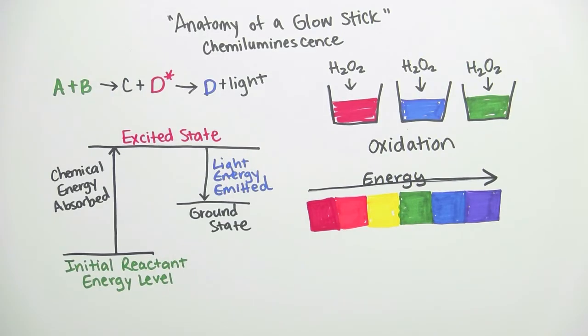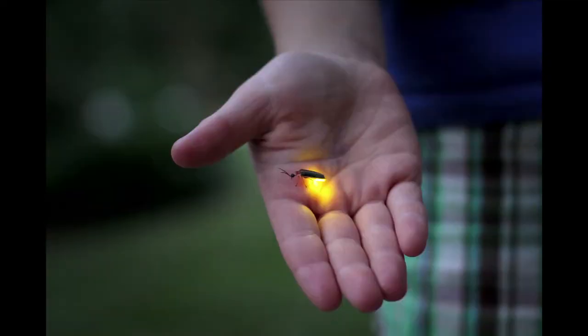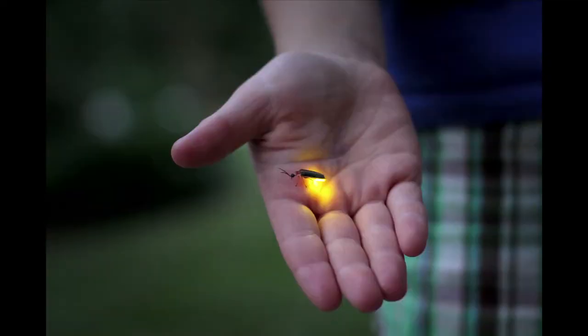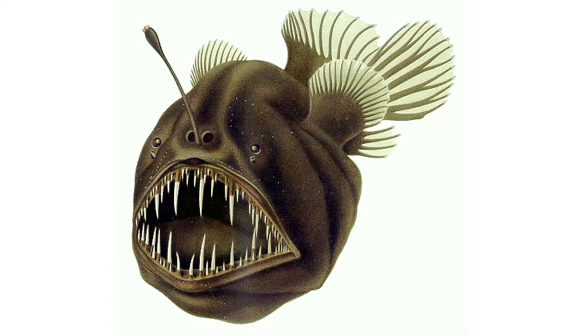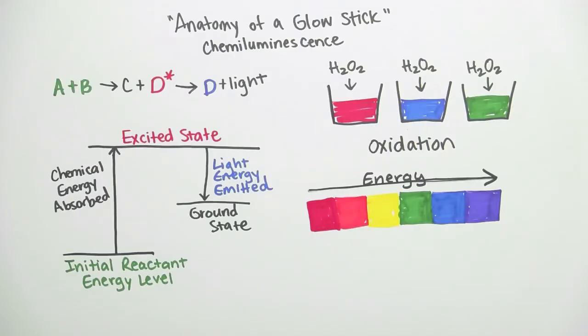And nature uses chemiluminescence too. If you've ever seen a firefly light up at night or an anglerfish hunt for prey, you've seen bioluminescence, which is chemiluminescence in a biological system. It's the exact same principle as the chemical reactions that Dr. Dolan showed us.